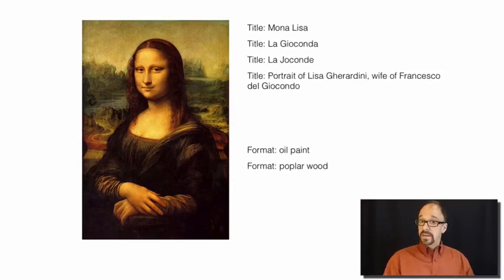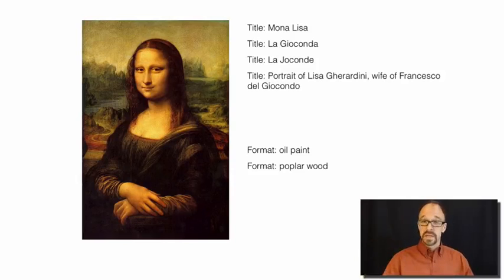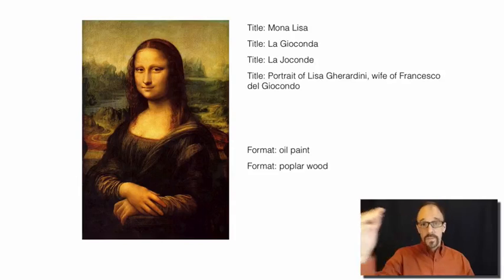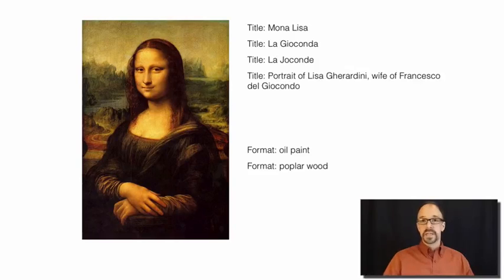The flip side of the dumb-down principle is repeatability. If you need an element more than once, you use it more than once and give it different values. As I've said, the Mona Lisa has different names in different languages. So if you want to create a really thorough metadata record, you repeat the element title and give it different values for the different titles in different languages.